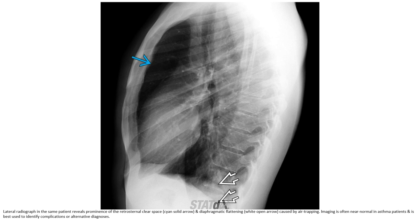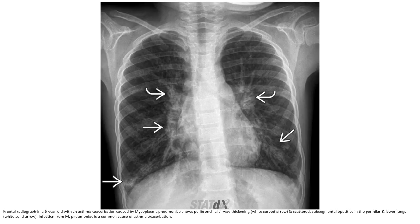Imaging is often near normal in asthma patients and is best used to identify complications and alternative diagnoses. This is a radiograph in a 6-year-old with an asthma exacerbation caused by Mycoplasma pneumoniae. There is peribronchial airway thickening and scattered subsegmental opacities. Infection from Mycoplasma pneumoniae is a common cause of asthma exacerbation.